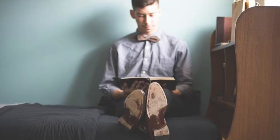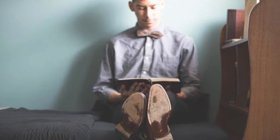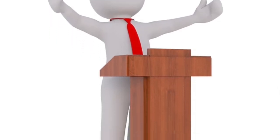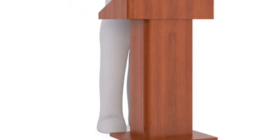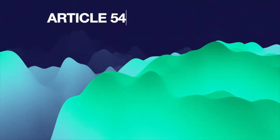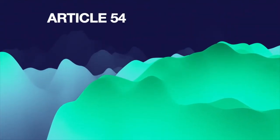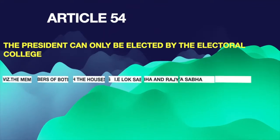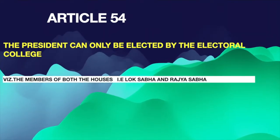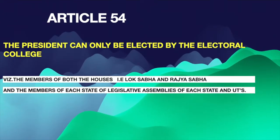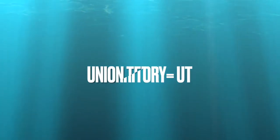This is one such case. The question is answerable in only one line: people choose their representatives, and those representatives choose the president. Howbeit, the process is a bit tedious — or somewhat interesting. Article 54 of the constitution says the president can only be elected by the electoral college, meaning the members of both houses of the parliament — that is Lok Sabha and Rajya Sabha — and the members of the legislative assemblies of each state and union territories.